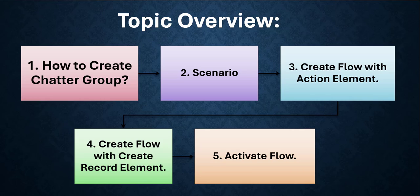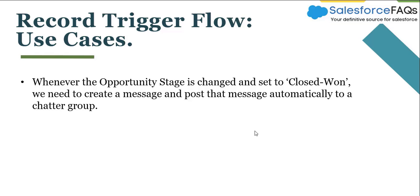First we will see the scenario, and after that I will show you how to create a chatter group in Salesforce. For this use case we need to create a record trigger flow so that whenever the opportunity stage is changed and set to Closed Won, we need to create a message and post it automatically to a chatter group. Let's jump to the Salesforce org to understand this scenario.